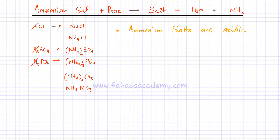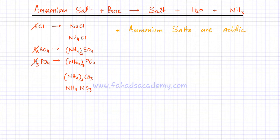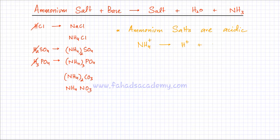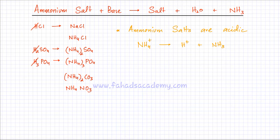Another thing to remember about ammonium salts is that they are acidic, which means they're capable of producing H+1 ions. This is why ammonium salts react with bases. All ammonium salts contain the NH4+ ion, and this ion is acidic — it's capable of producing H+1 ions. When it loses an H+1 ion, it ends up producing ammonia gas.